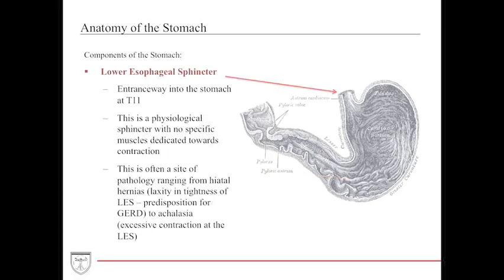The lower esophageal sphincter is located at the entrance into the stomach, around vertebral level T11. It is a physiological sphincter, meaning it has no specific muscles dedicated to its contraction. Because of this, it is often a site of pathology, ranging from hiatal hernias to achalasia.